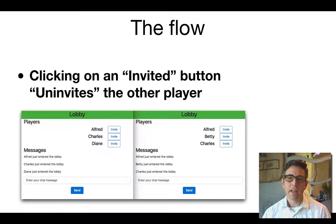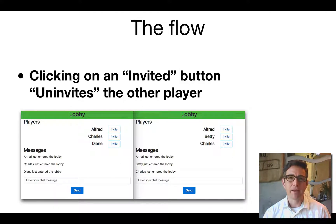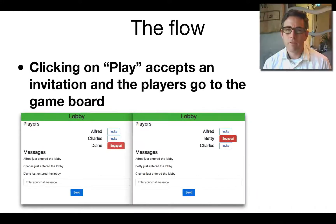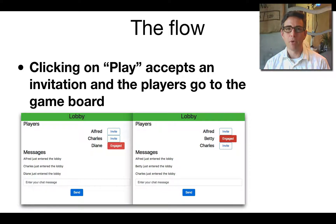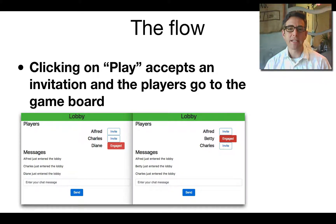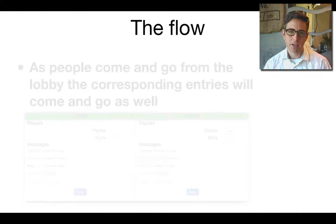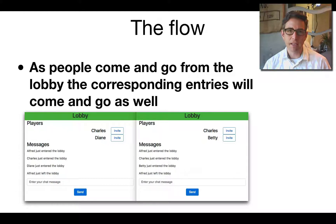Clicking the invited button will uninvite the player, reverting to the state where no one is inviting, and the other player's button goes back to invite. Clicking play causes the invitation to be accepted, and both players go to the game board immediately. As people come and go from the lobby, their entries appear and disappear — when two people start a game, the remaining lobby players see those entries disappear.